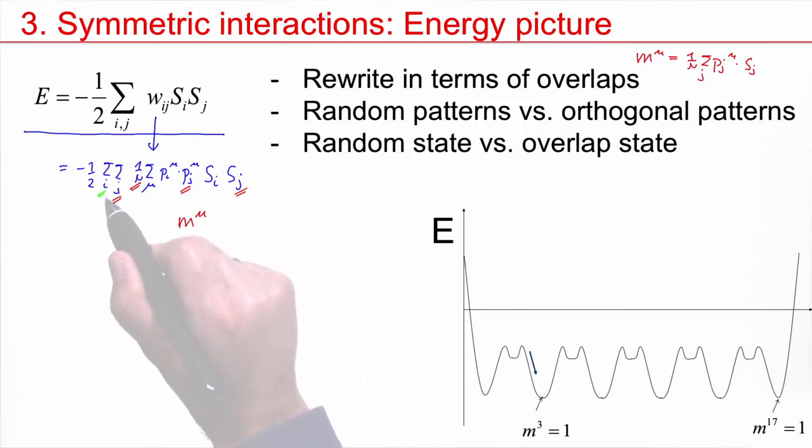But now look at this. I have another sum, sum over I, P_I^mu S_I. So I have another overlap, except that I am missing the factor N. So the factor N remains. And then the only thing that remains is the sum over mu.